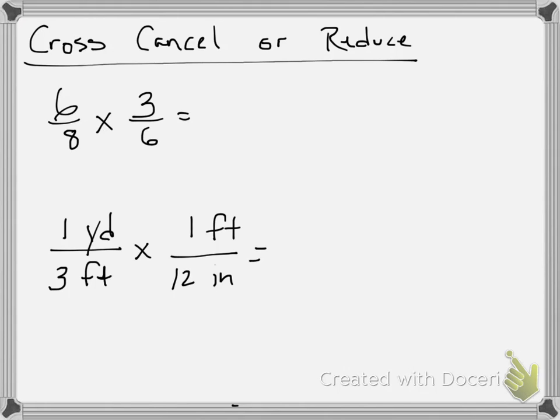Cross-canceling. You've done this a lot with fractions. With this first one, if I wanted to say 6 eighths times 3 sixths, I could multiply straight across. 6 times 3 is 18, and 8 times 6 is 48. But we learned this step, where if we can cross-cancel or cross-reduce, and say, I could divide this by 6 and this by 6, and these would be 1, now my multiplication is much easier.